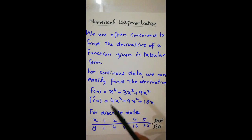We can easily find derivative of the function by taking derivative and its derivative is 4x^3 + 9x^2 + 18x.